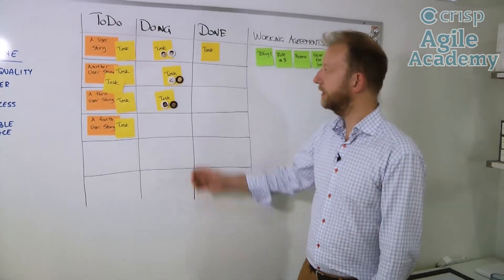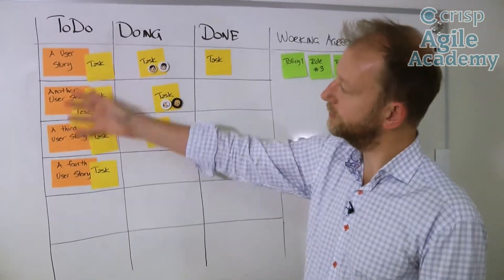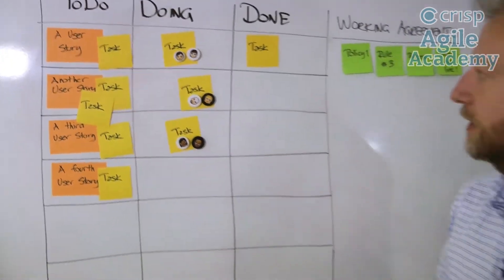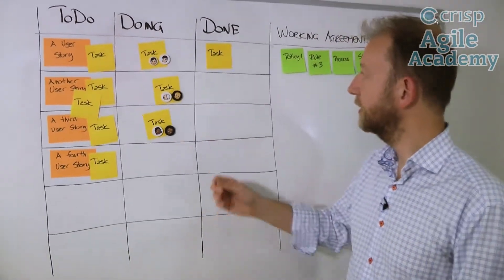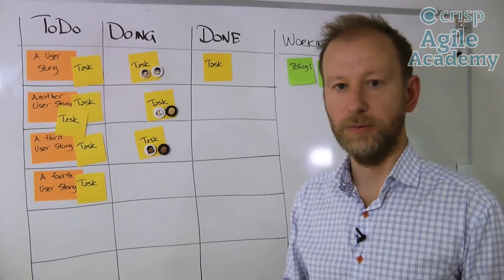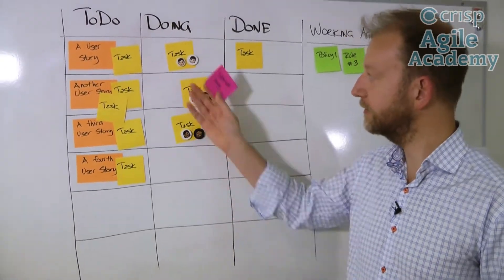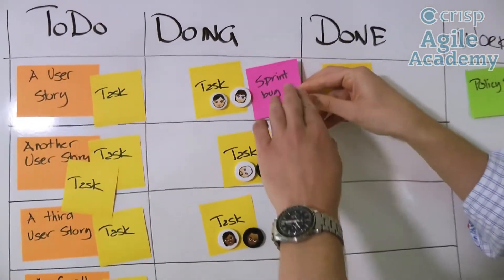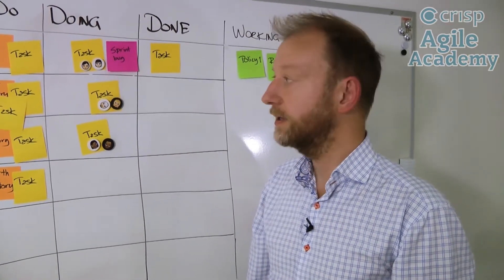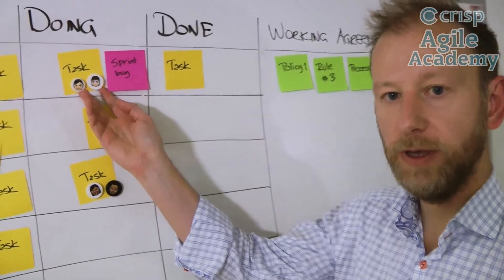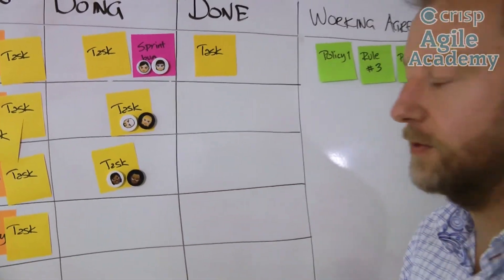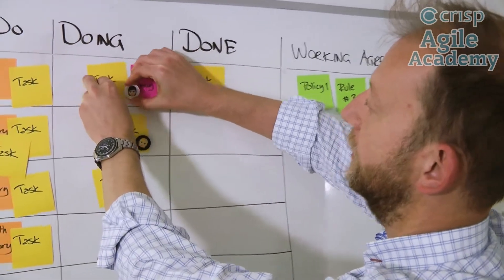Consider your standard sprint — here's your scrum board. We have four different user stories here with their tasks, and we have three different pairs working on their user stories. Let's say that during testing of one of these tasks, they find a bug. You don't file a bug report in your bug reporting system. Instead, you talk to the developers and you put up a little post-it that says we got a bug here. As soon as practically possible, these two stop the line — they stop what they're doing and start working on the sprint bug instead. As soon as they fix the bug and verify it with automatic tests, they continue where they were before and put the bug to done.